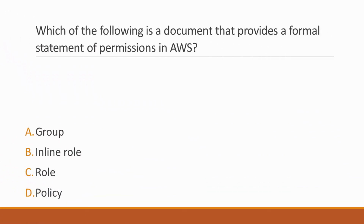Next question: Which of the following is a document that provides a formal statement of permissions in AWS? Options: A. Group, B. Inline role, C. Role, D. Policy. Correct answer is option D, Policy, because a policy is a JSON document that specifies what an AWS user is allowed to do. It is attached to a user and defines that user's permissions.